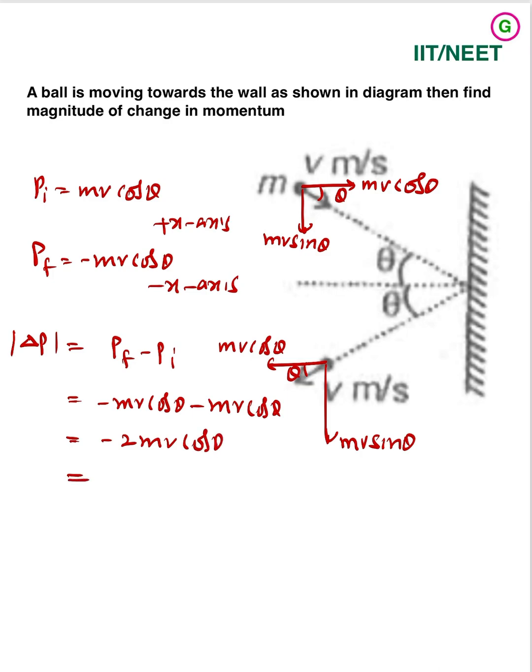So here they are asking magnitude, never be negative. So 2 mv cos theta is the answer. This will be along the horizontal.